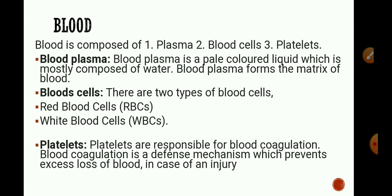In 9th class we learned about blood. Blood is a liquid connective tissue. It consists of a fluid matrix called plasma, and three types of cells suspended in plasma: red blood corpuscles or red blood cells, white blood cells, and blood platelets.